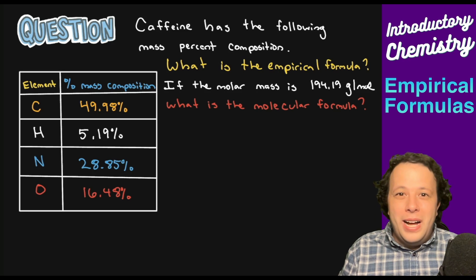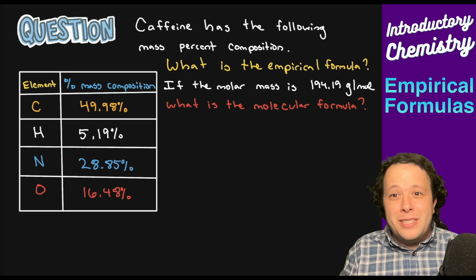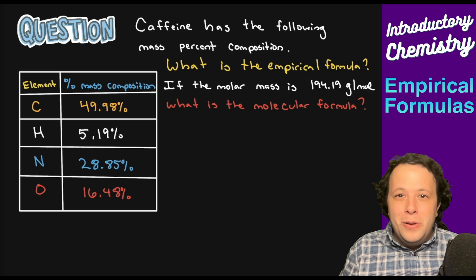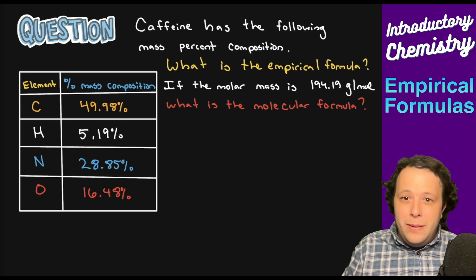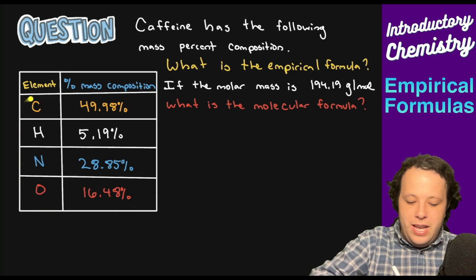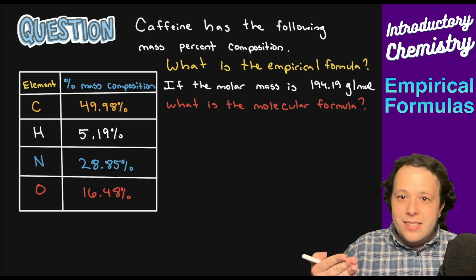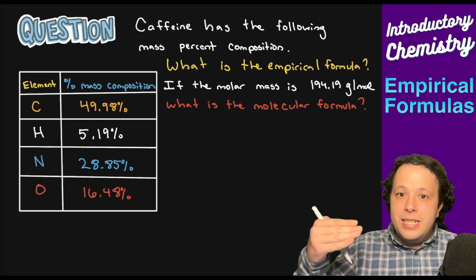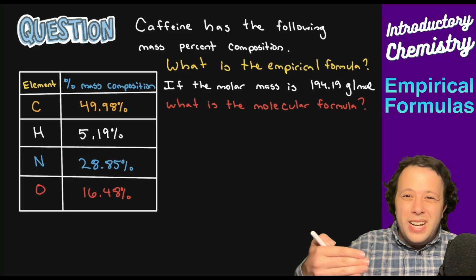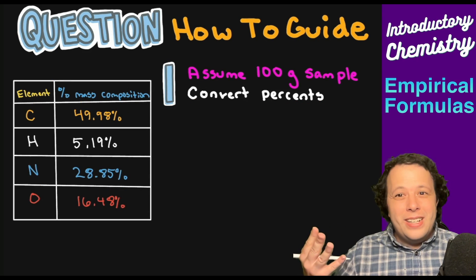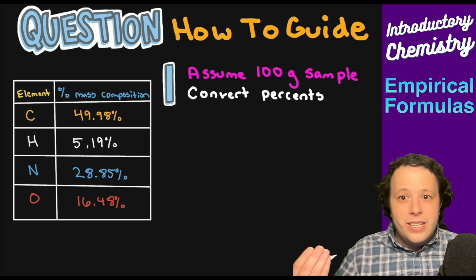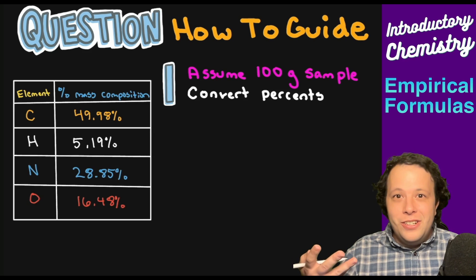Caffeine has the following mass percent composition. Caffeine is what keeps us all going every single day. What is the empirical formula? And if the molar mass is 194.19 grams per mole, what is the molecular formula? From these types of problems, you will commonly get a set of percents which tell you how much of each individual element exists. Let's go through this type of problem step-by-step. The first step in the how-to guide for solving an empirical formula problem — you will probably see one on your first or second exam in general chemistry.